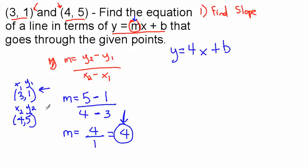Now you can use either one of these coordinates to figure out what b is. Let's use the top one. So we plug in 1 for y, because here it's 1, and then it's going to equal 4 times x, which is 3, and this is how we solve for b. And so we have 1 equals 4 times 3 is 12, plus b.